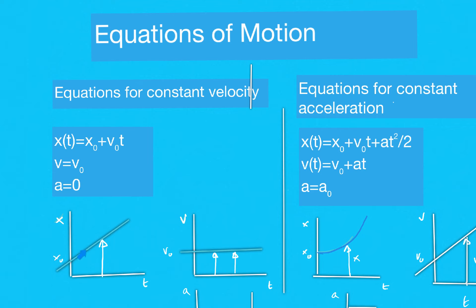So the curve x of t will be distorted and curved. The three equations for motion with constant acceleration are: x(t) = x₀ + v₀t + ½at², where the a·t² term accounts for the fact that velocity is not constant. The second equation is v(t) = v₀ + at, showing that velocity changes at a constant rate.